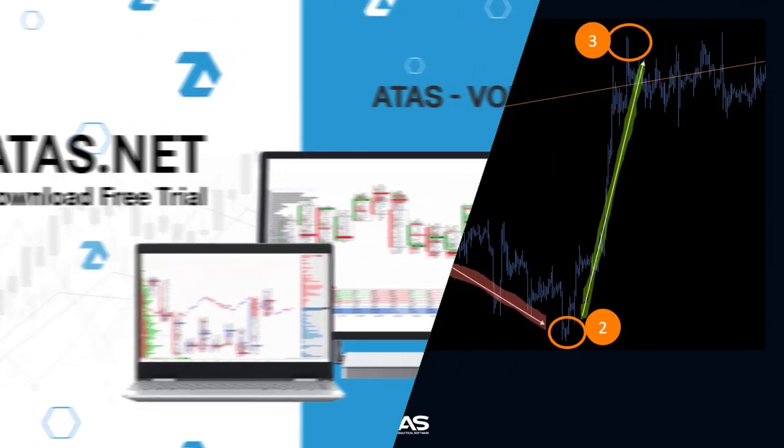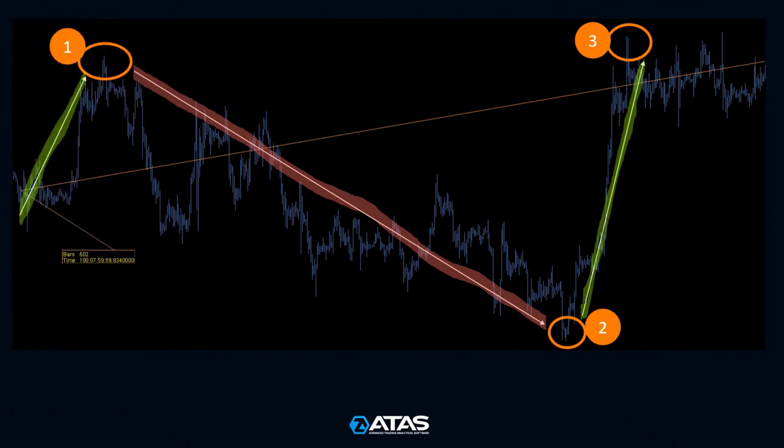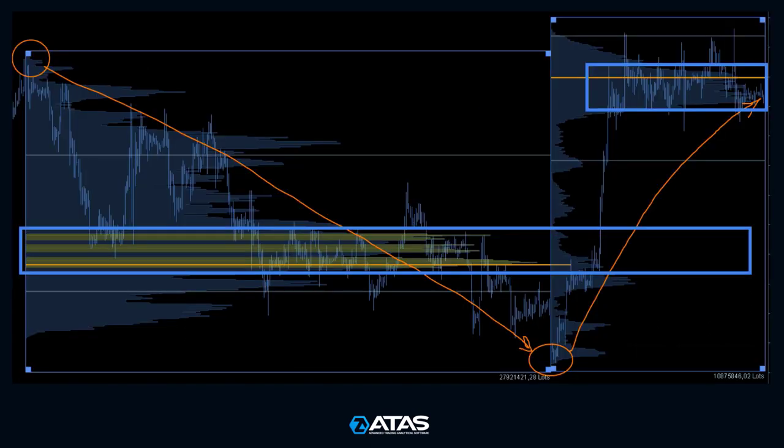Have you ever found yourself in a situation where you're staring at the chart, unsure if a reversal has occurred? One of the most reliable ways to identify a reversal or current trend is through the volume profile. If you're not familiar with this tool, it aggregates the trades of buyers and sellers at each price level within the selected range.